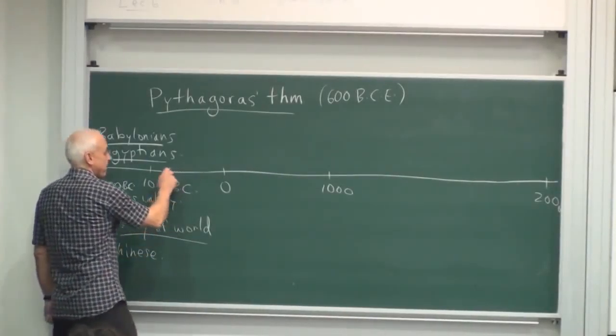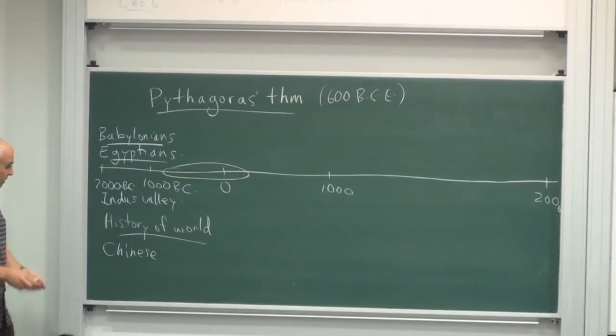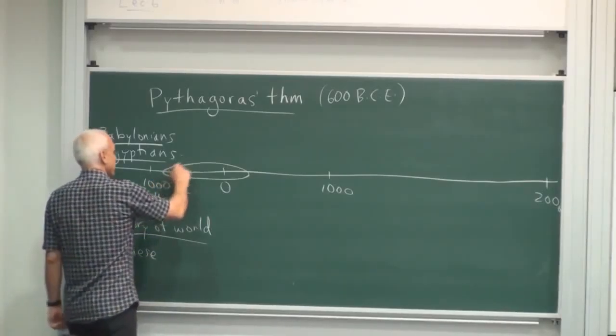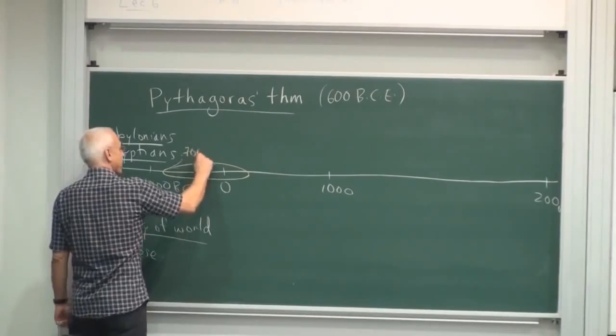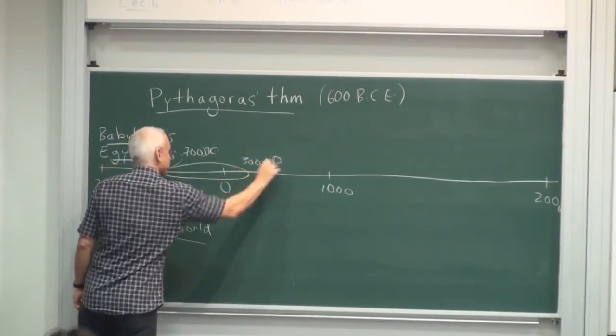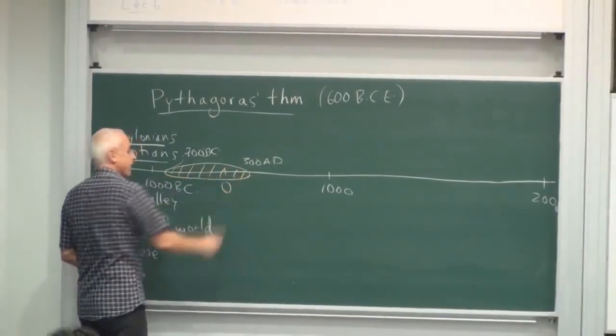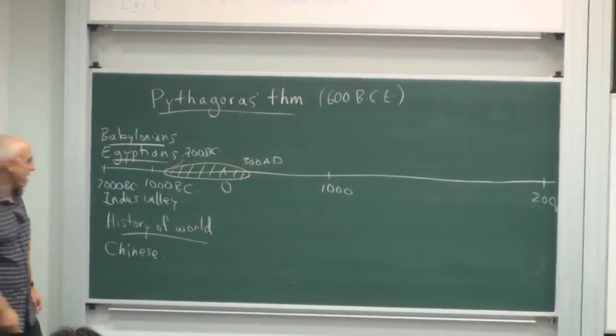And that happened, the Greek period is roughly sort of like this. Roughly a thousand-year span from about 600-700 BC to maybe 300 AD. So this was the golden age of Greek mathematics.